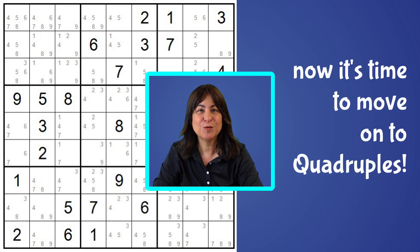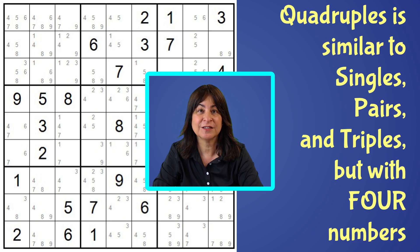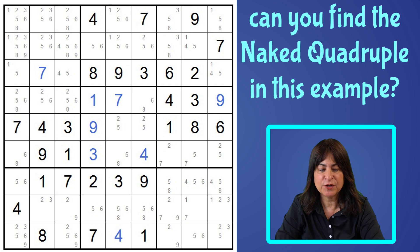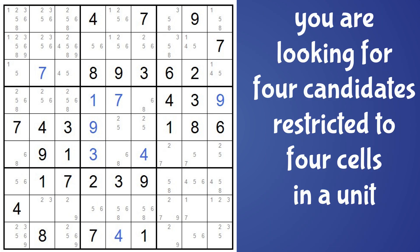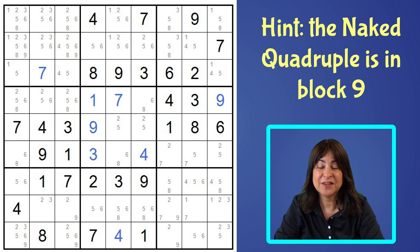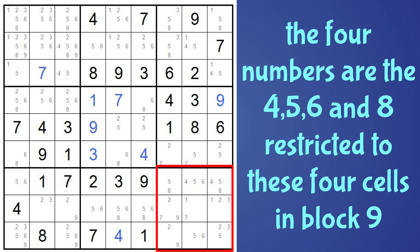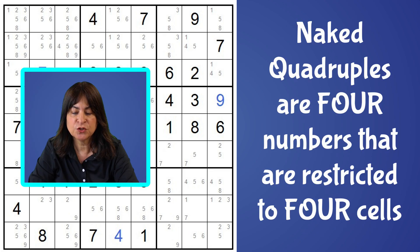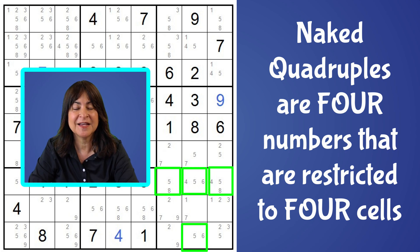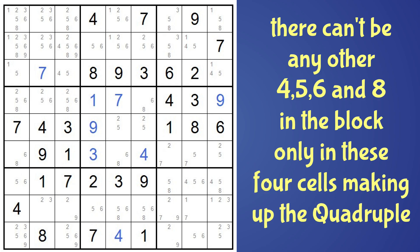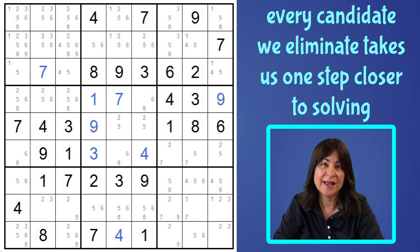Are you ready to talk about quadruples? It's the same concept as singles, pairs, and triples — just with four numbers. Let's start with an example of a naked quadruple. You're looking for four candidates restricted to four cells — take a look at block nine. It's the four, five, six, and eight restricted to these four cells. Just like with pairs you have two candidates restricted to two cells, and with triples you have three candidates restricted to three cells, with quadruples you have four candidates restricted to four cells. So there can't be any other four, five, six, and eight in the block — only in these four cells — which means we can eliminate this five here. That's not much of a payoff, but every little bit counts.